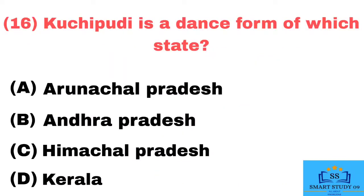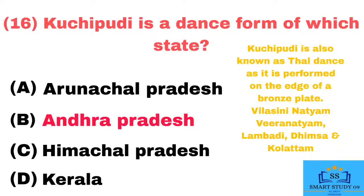Q16. Kuchipudi is a dance form of which state? Answer: Andhra Pradesh. Kuchipudi is also known as Thal dance as it is performed on the edge of a bronze plate. Other dances of Andhra Pradesh include Vilasini-Natyam, Viranatyam, Lambdi, Dhimsa, and Kolittam.